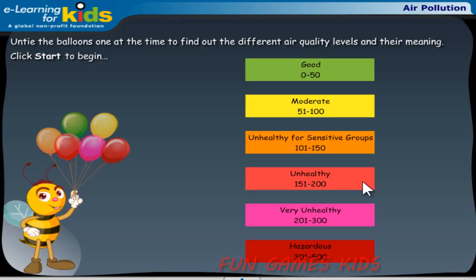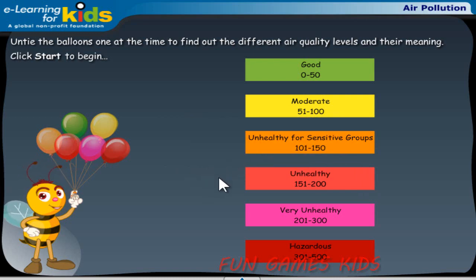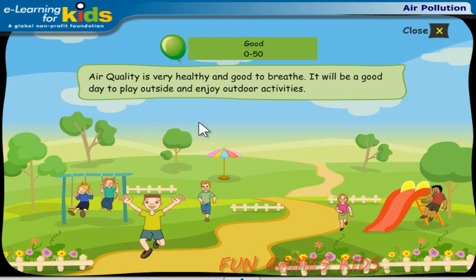Untie the balloons one at a time to find out the different air quality levels and their meaning. Click Start to begin. Click the green balloon. Air quality is very healthy and good to breathe. It will be a good day to play outside and enjoy outdoor activities. Click the close button in the upper right corner to continue.